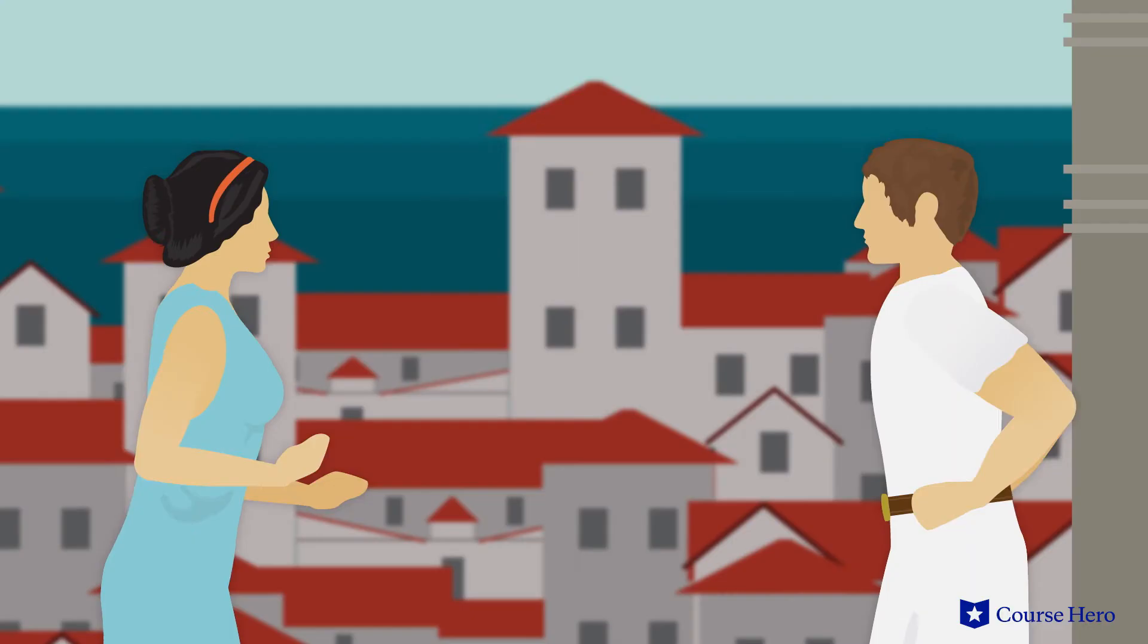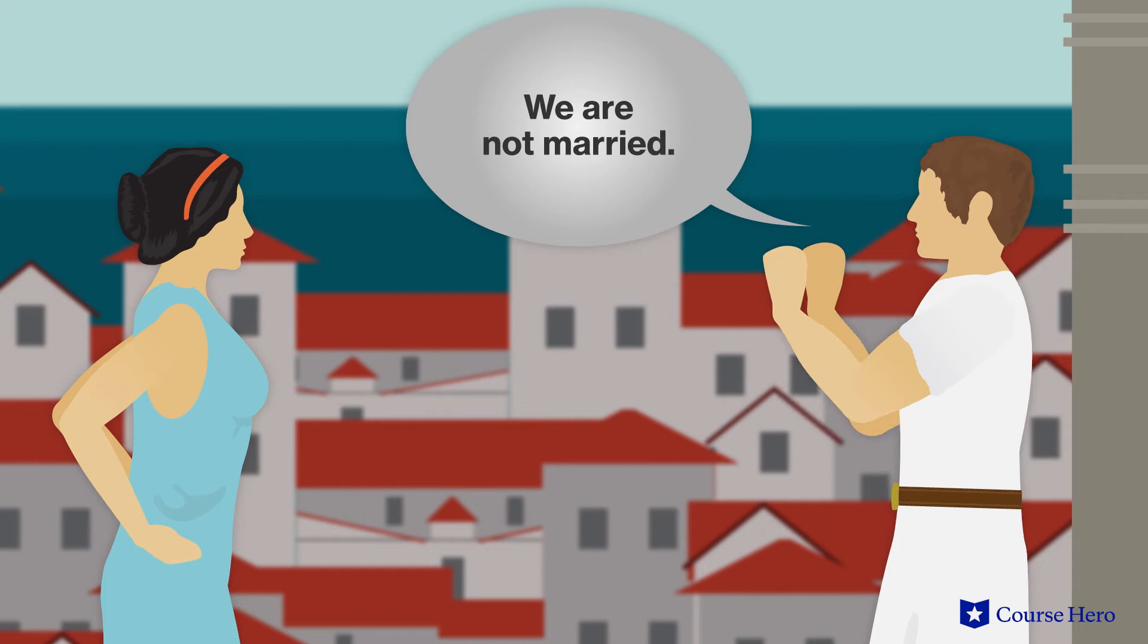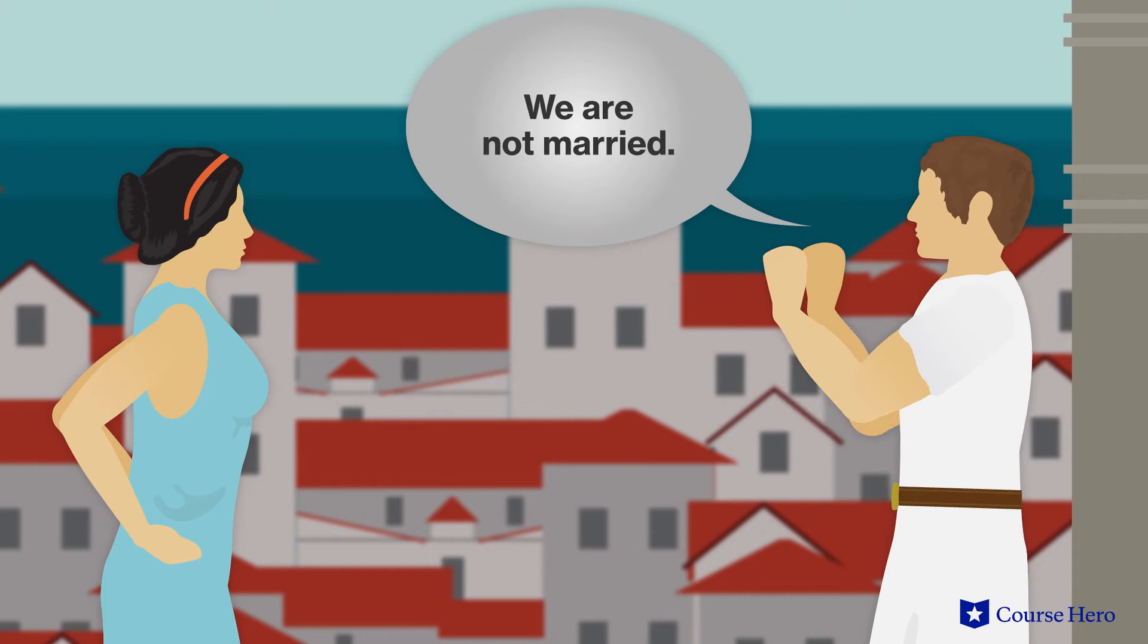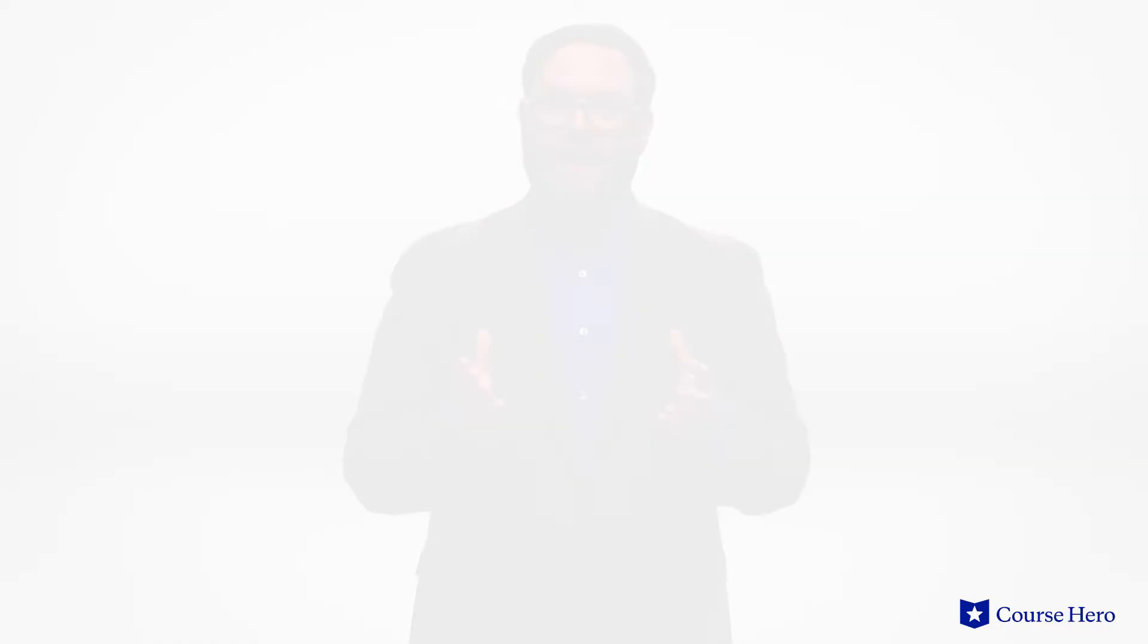Queen Dido is pushed by Aeneas' mother Venus and Juno, Carthage's own patron goddess, into a love for Aeneas that is very close to madness. Aeneas' fate inevitably takes him away, and the madness drives Dido to dramatic suicide.